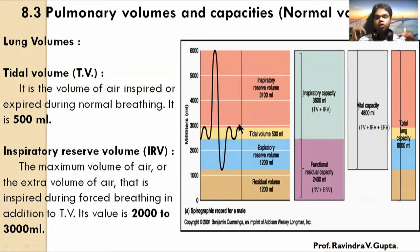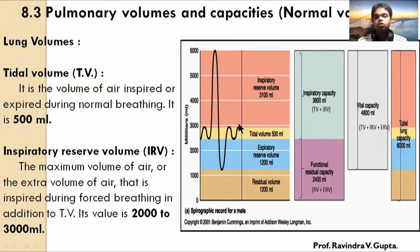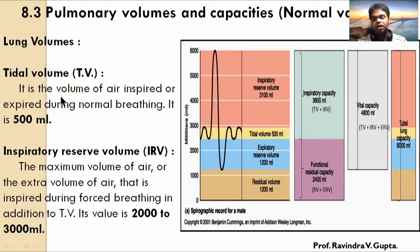What is the meaning of breathing in our body? This is called normal breathing. During normal breathing, the air goes in and the air goes out. This value is the tidal volume, and during normal breathing the tidal volume is 500 ml.